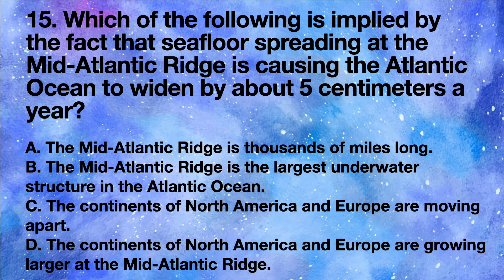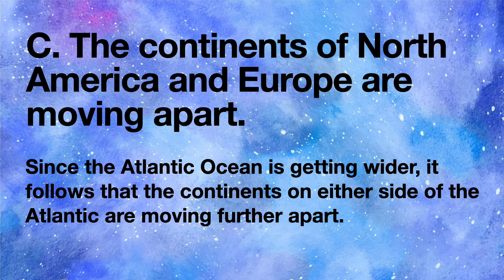Which of the following is implied by the fact that seafloor spreading at the mid-Atlantic ridge is causing the Atlantic Ocean to widen by about five centimeters a year? A the mid-Atlantic ridge is thousands of miles long, B it is the largest underwater structure in the Atlantic Ocean, C the continents of North America and Europe are moving apart, D the continents of North America and Europe are growing larger at the mid-Atlantic ridge. Answer: C. Since the Atlantic Ocean is getting wider, it follows that the continents on either side of the Atlantic are moving further apart.